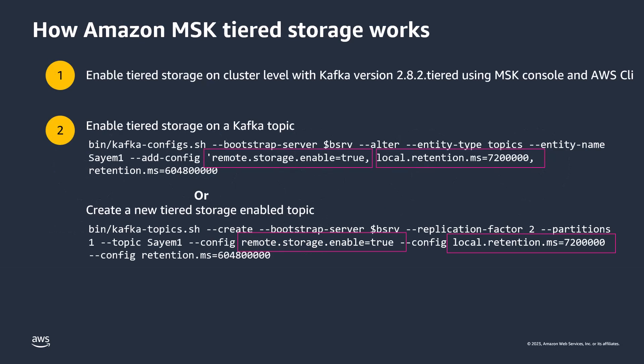You can easily enable the Tiered Storage feature on Amazon MSK. To enable it on an existing cluster, upgrade to Kafka version 2.8.2.tiered and then choose Tiered Storage and EBS storage as your cluster storage mode — using the MSK console or AWS CLI. After enabling tier storage on a cluster, you can choose individual topics to enable it on using the Kafka CLI. For example: enabling tiered storage on an existing topic with two hours local retention and seven days tiered storage retention, or creating a new topic with the same settings.